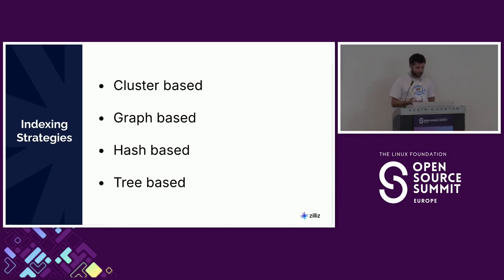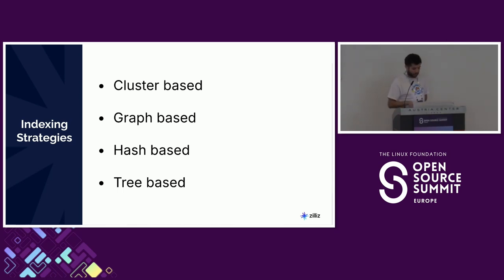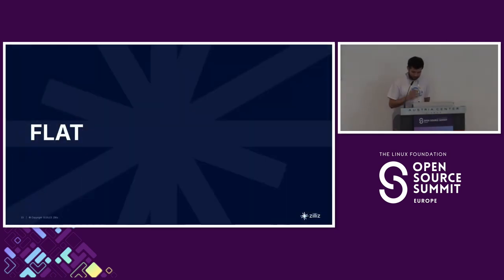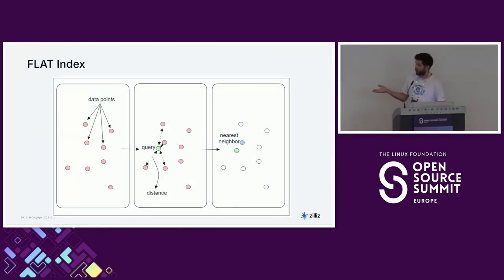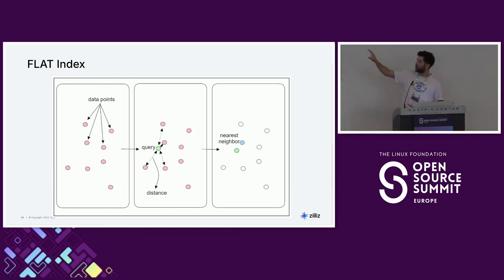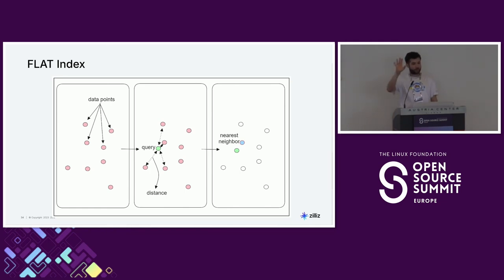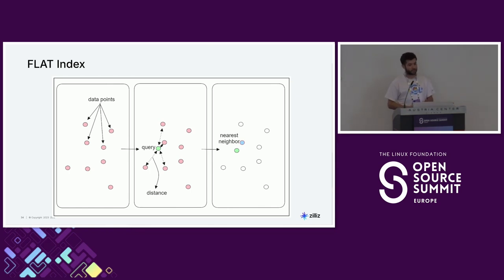You have different index strategies: cluster, graph, hash, or tree. I'll focus on cluster and graph. First, the classic flat index — it's brute force. It can work at some scale, but it doesn't work at crazy scale. How it works: data points are projected into space, then for a query you run nearest neighbor on all points. It can be very quick at small scale, but if you have 10 billion vectors, you're going to do 10 billion operations — that doesn't scale.